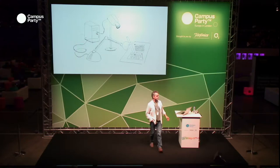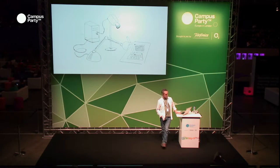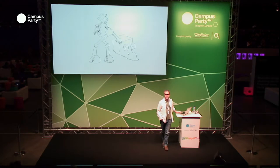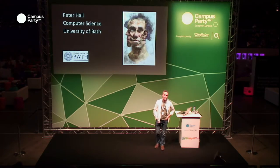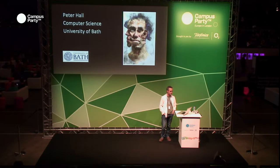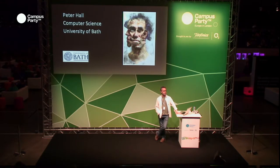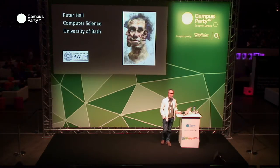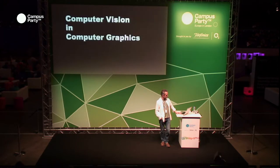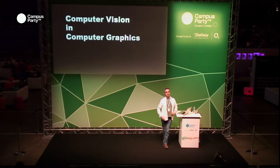Thanks for coming to this talk. I'm going to ask questions like: can computers draw? Can computers make sculptures? I'm Peter Hall, a member of the Department of Computer Science at the University of Bath. I'll show you examples of how computers might be able to draw and sculpt, and explain the basic techniques behind how we get computers to perform those functions. The key thing is the convergence of two areas of computer science: computer vision and computer graphics.